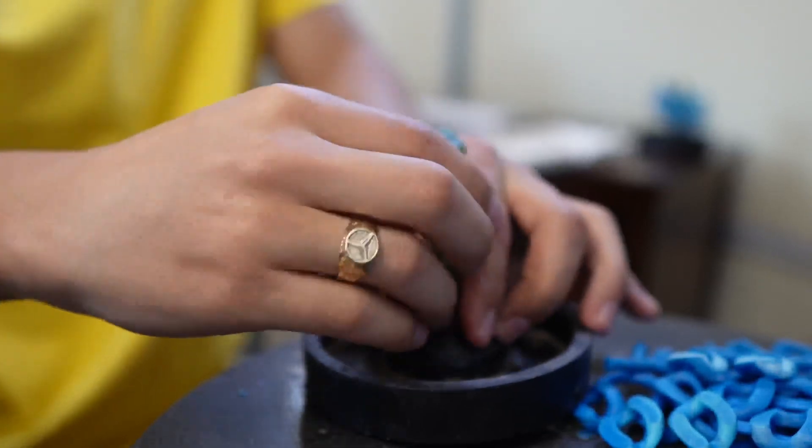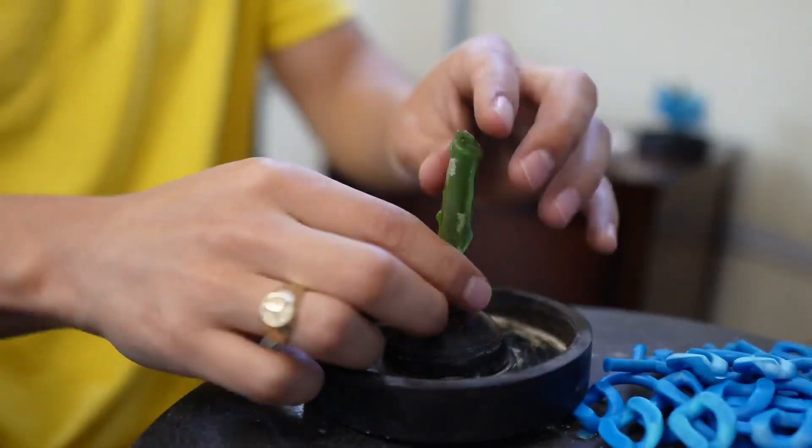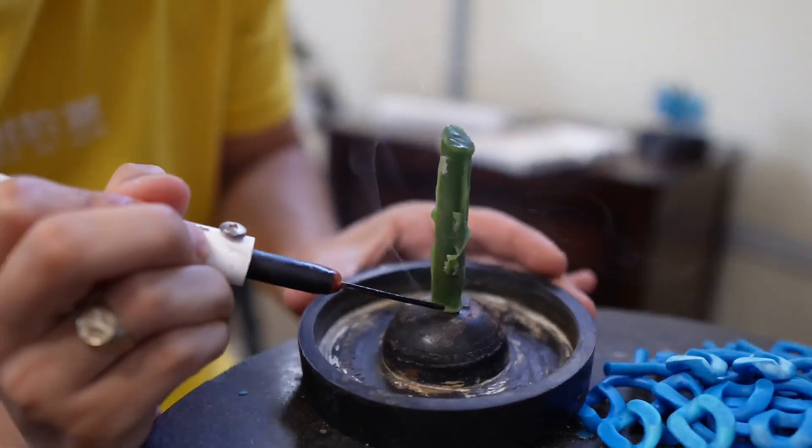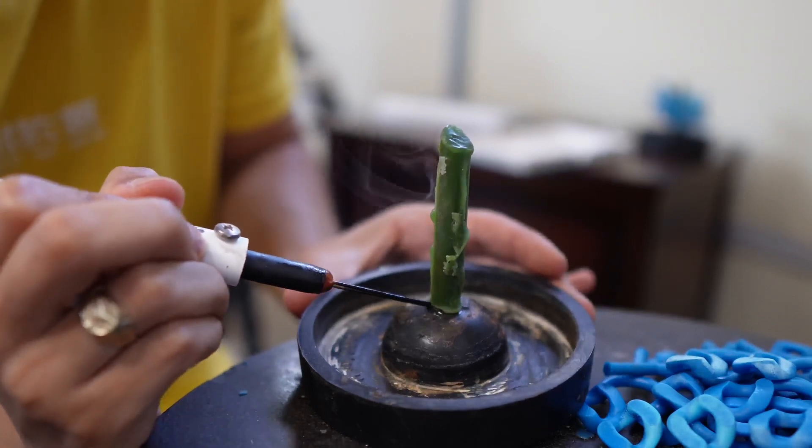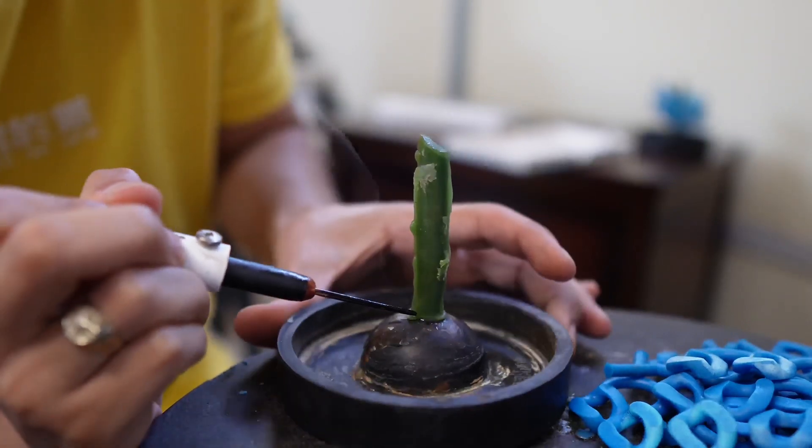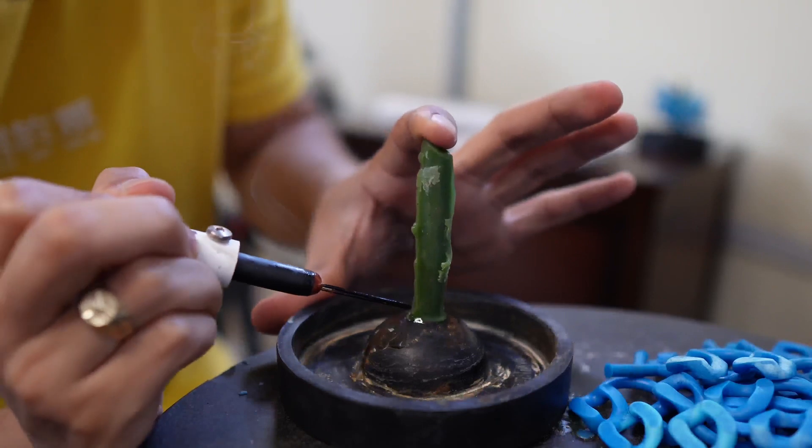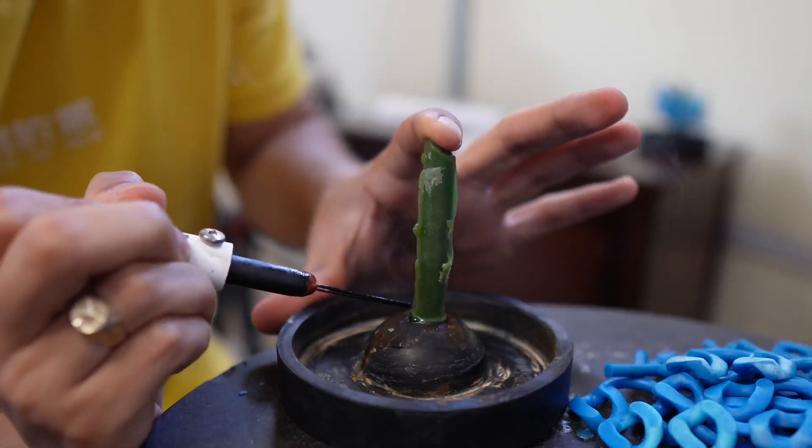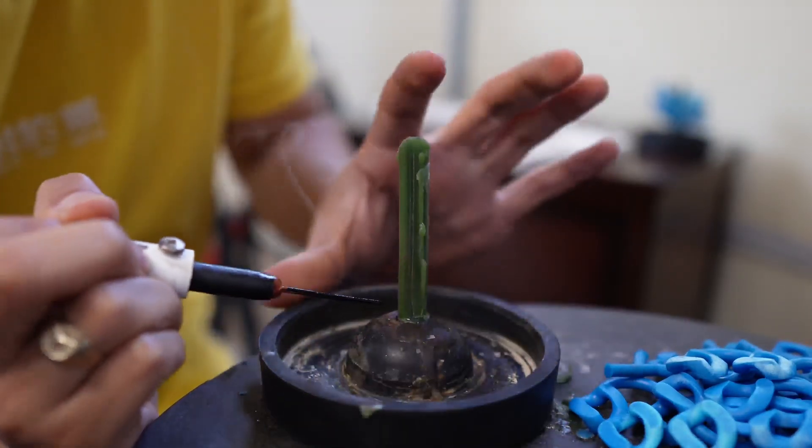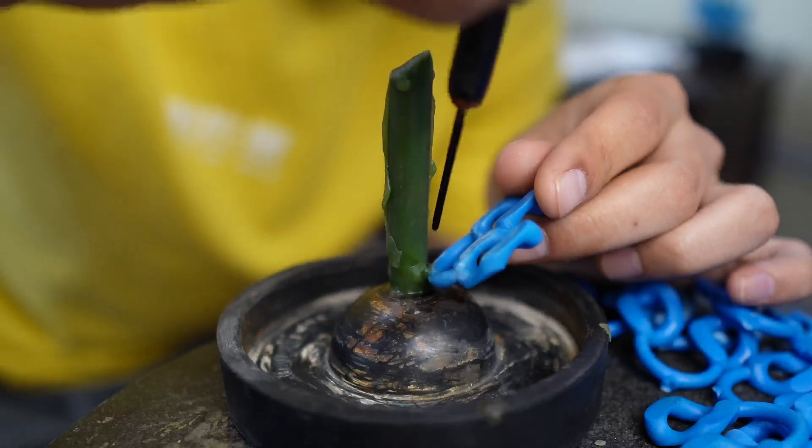Make sure that the wax sprue is nice and tight so that you don't have it falling over while you are putting up the wax tree, because I've had that happen to me many times and usually when it falls over it's very delicate and it breaks easy. So just make sure that the bottom is nice and tight.